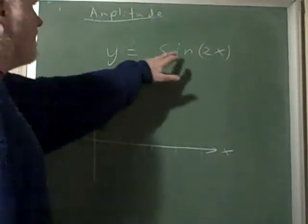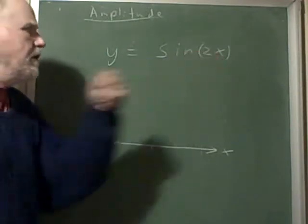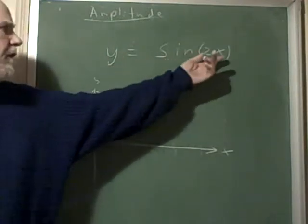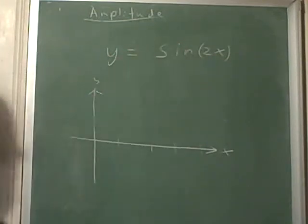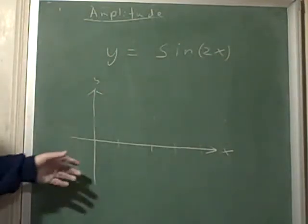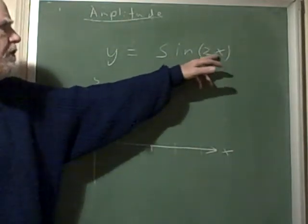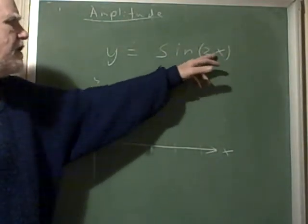Here I have y equals the sine of 2x, where the 2 is inside, part of the argument of the sine of x. I cannot factor a 2 out, it's stuck in there. What happens is as x moves through here, it moves twice as fast.